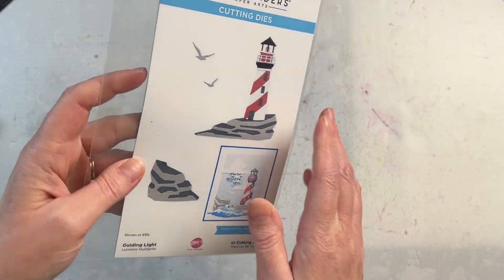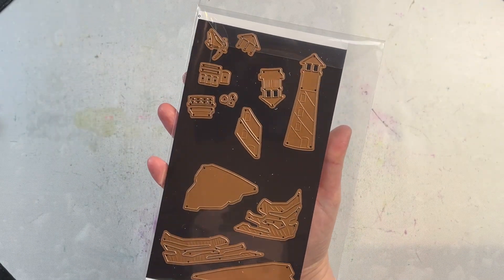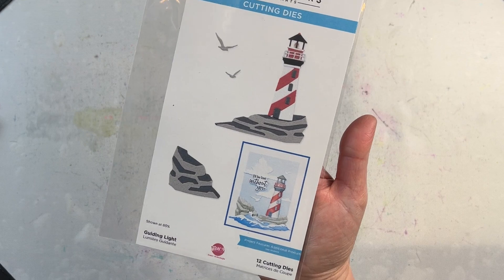This is the Guiding Light die set from Spellbinders. There are 12 different dies in the set and it's part of the Fairwinds collection.